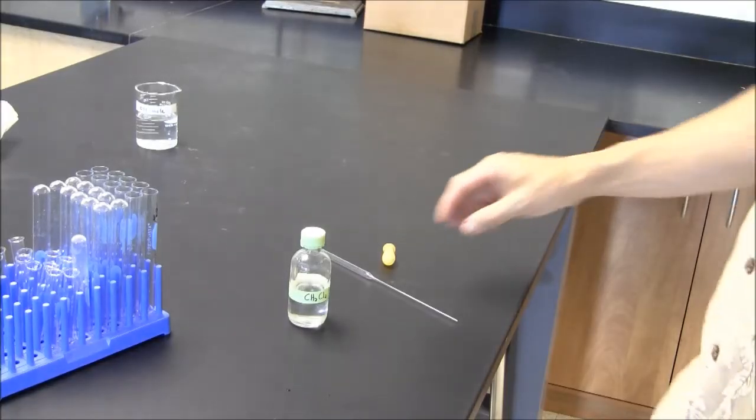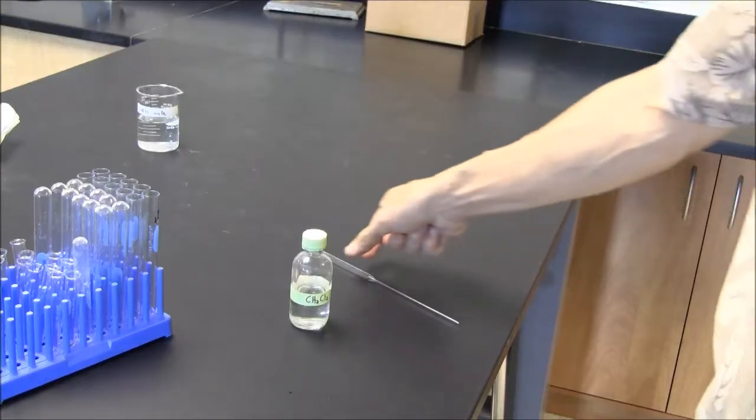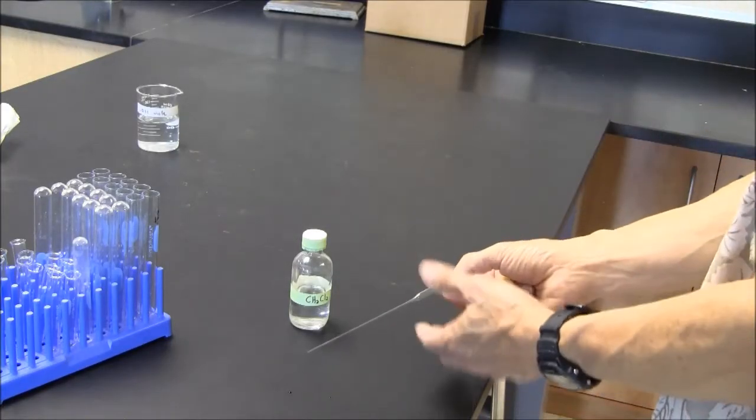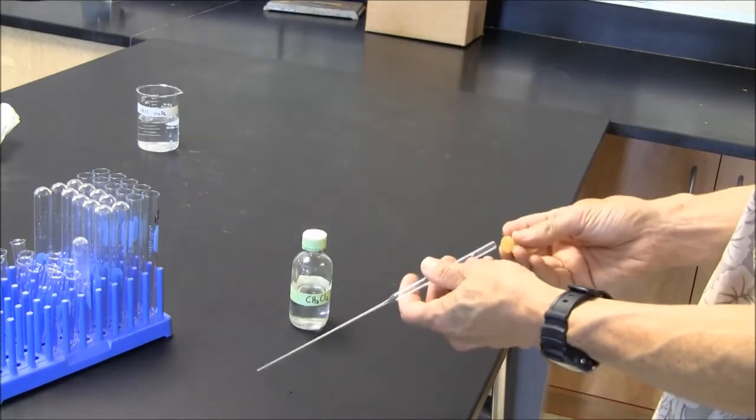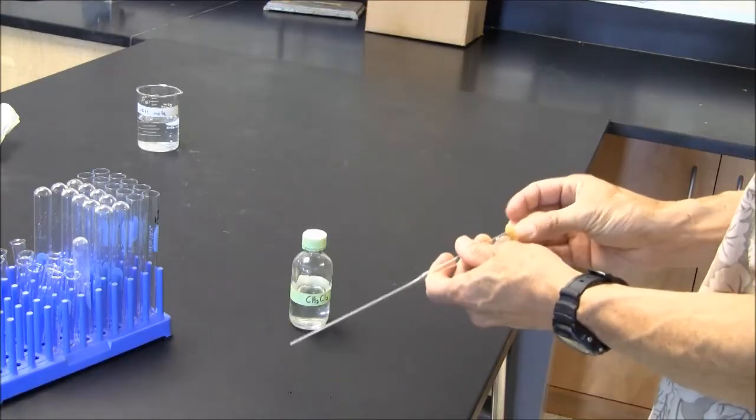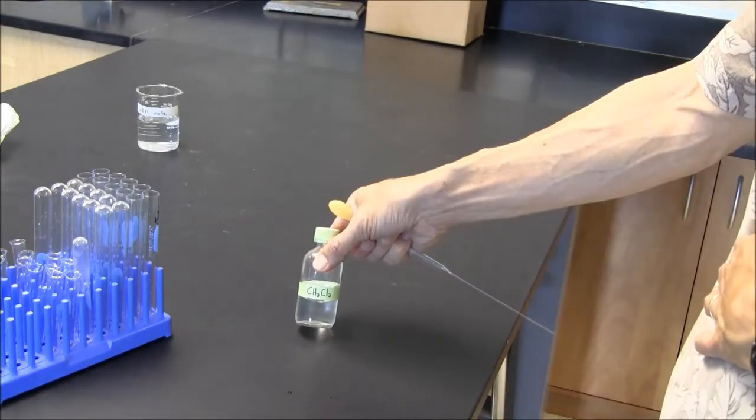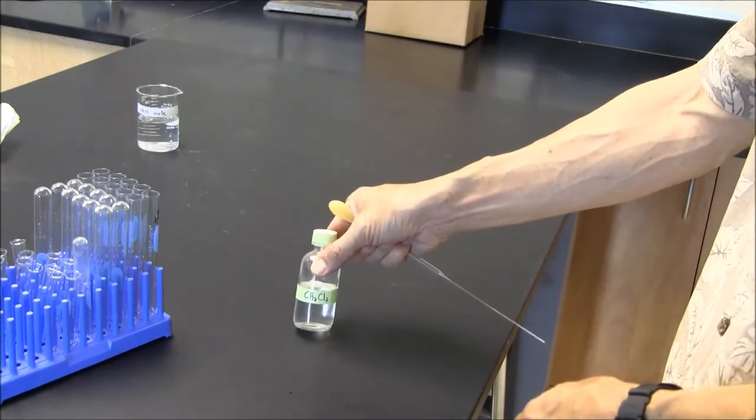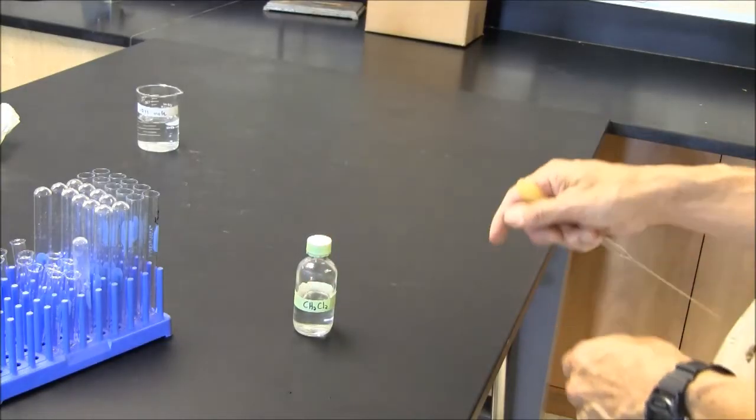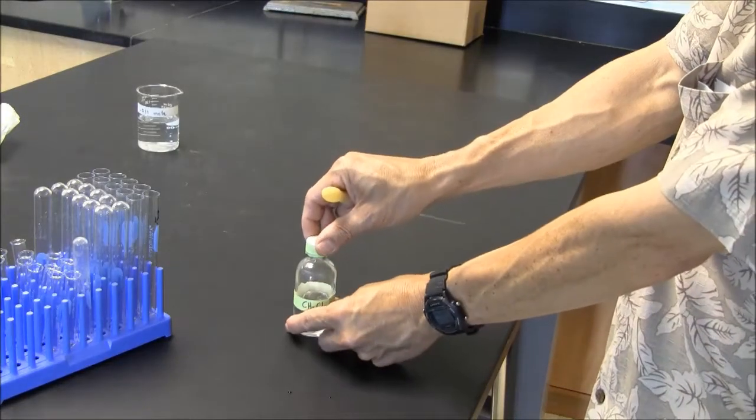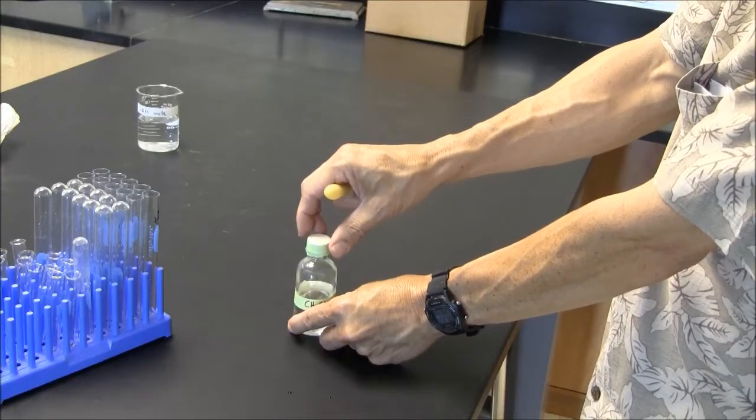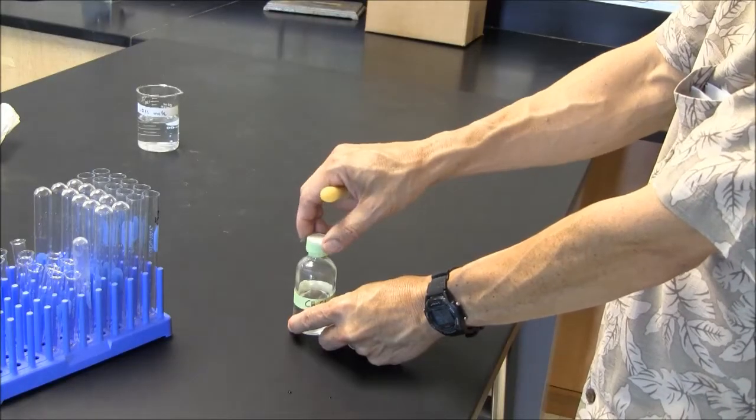Pipetting organic solvents can be tricky. Water is very cohesive and tends to stay in the pipette, but organic solvents are less cohesive. The most difficult solvent to pipette is probably methylene chloride. It has no hydrogen bonding to make it cohesive. Its boiling point is near 40 degrees, which is about the same as human body temperature.